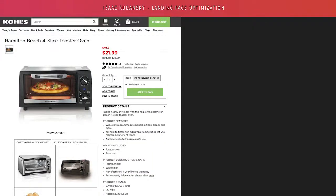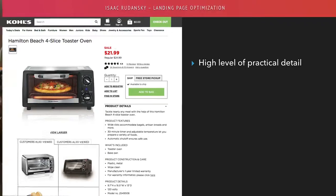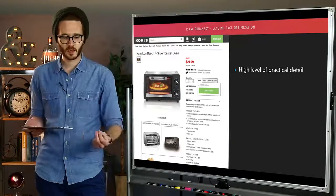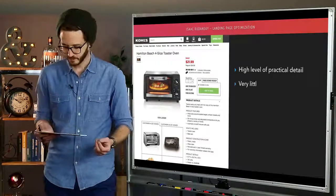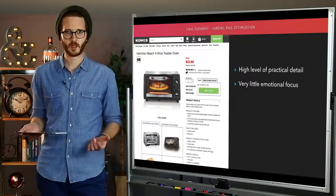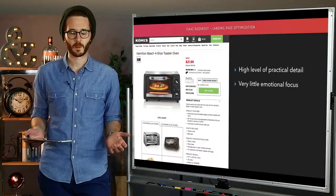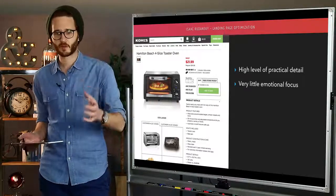Okay, so this is a page from Kohl's, Hamilton Beach four-slice toaster oven. Now you can get this toaster oven in many different places. They're not the only one. There's hundreds of online retailers that sell that. So if you look at the page, you see a high level of practical detail. There's product information. There's reviews. There's the features of the product. There's the dimensions of the product. There's very little emotional focus. What's going to sell this thing is doesn't have the features that I'm looking for at a good price point. So that's the type of information you want to provide.